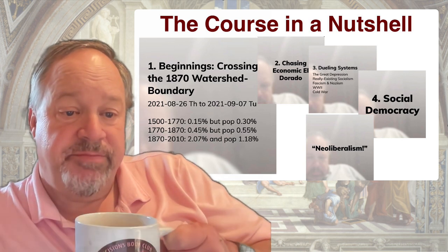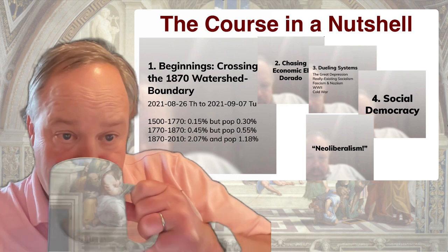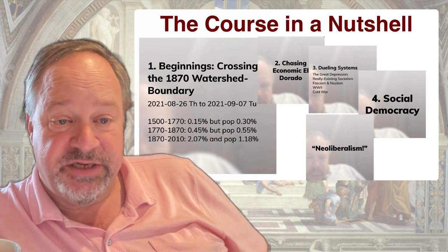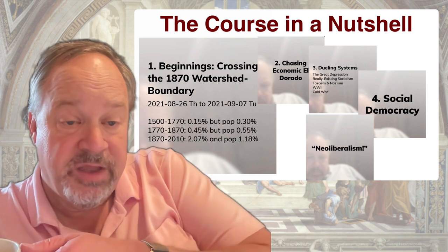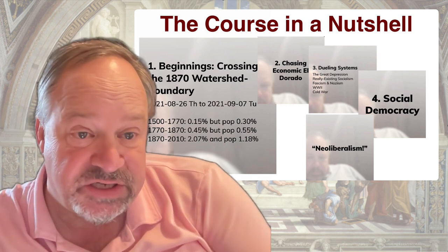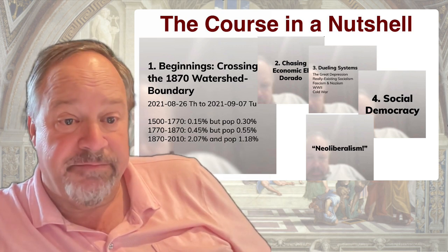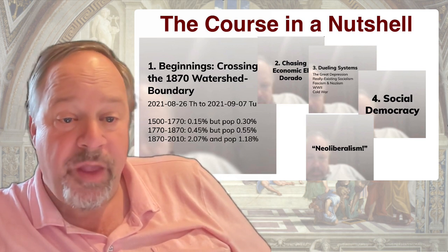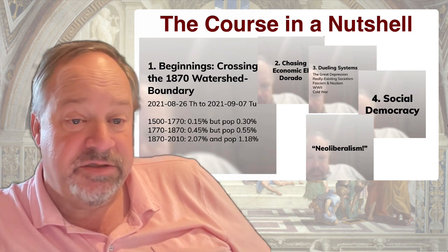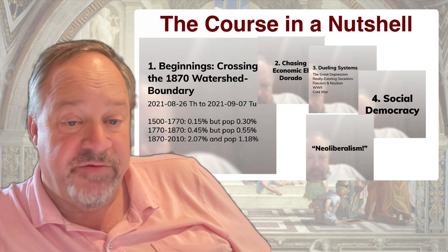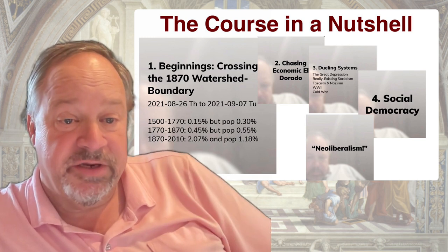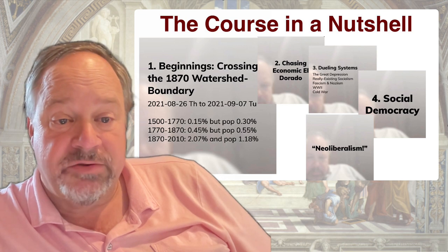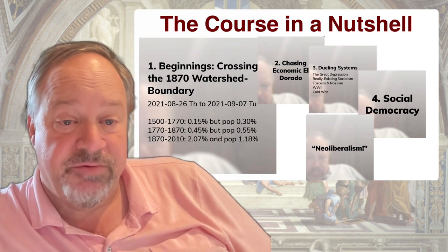Our story really begins back in 1870 or so, with the crossing of the watershed boundary that separated the long Malthusian age — in which humanity had fallen with the invention of agriculture — from the age of modern economic growth, which has carried us to a much richer and more civilized society. From 1500 to 1770, the rate of technological improvement in humanity, the value of the stock of ideas about how to manipulate nature and organize humans, had been growing at about 0.2% or 0.15% per year.